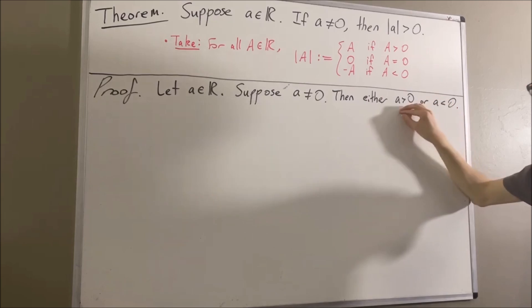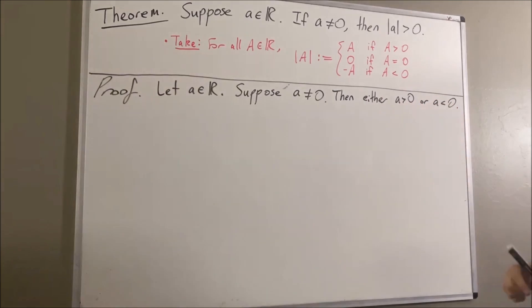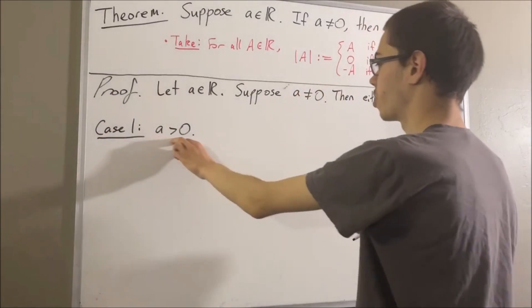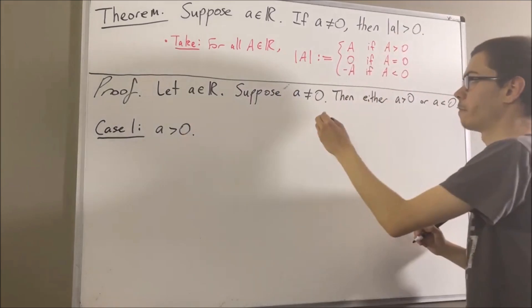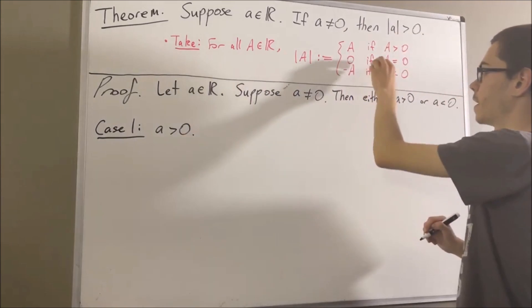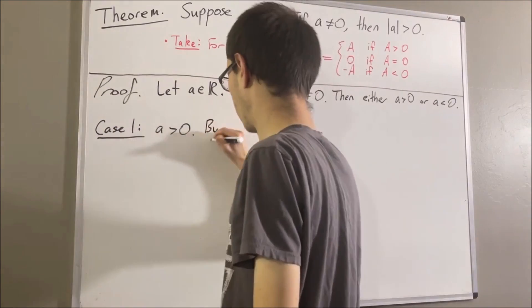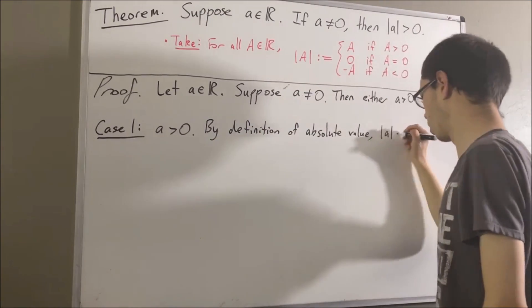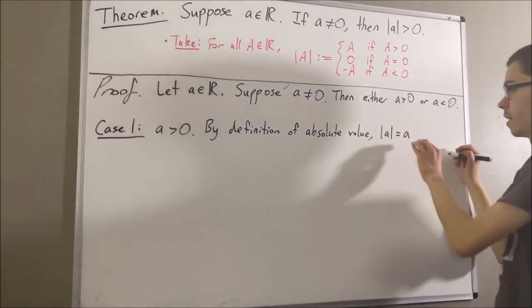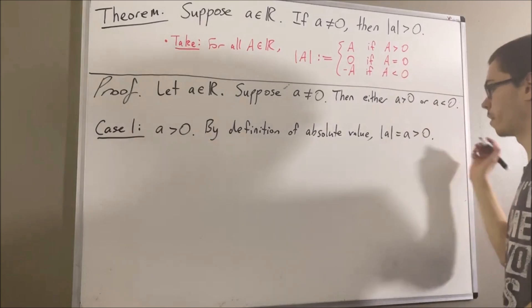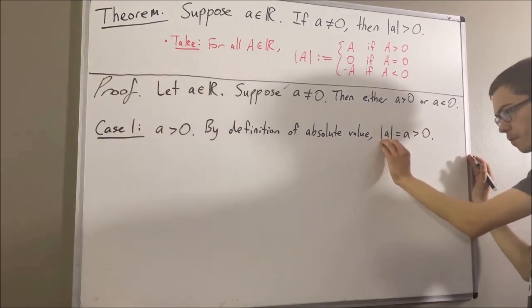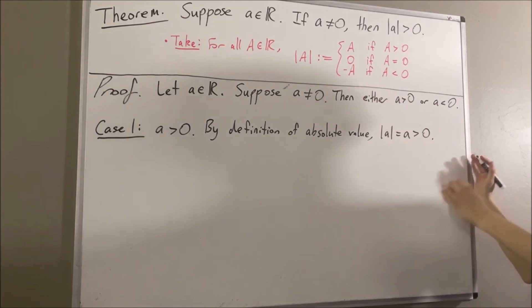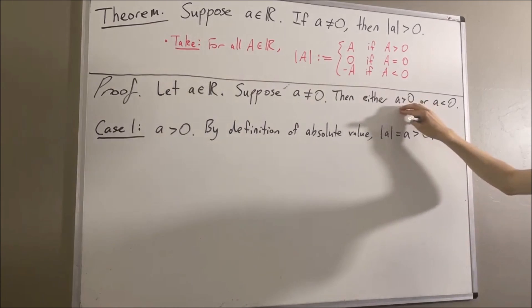Let's start with case one, where A is greater than zero. Since A is greater than zero, the absolute value of A is defined by A. And A is greater than zero. Therefore, the absolute value of A is greater than zero, as required. This completes the case where A is greater than zero.